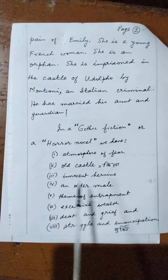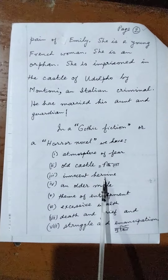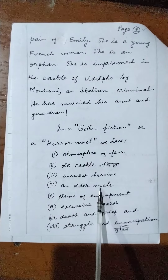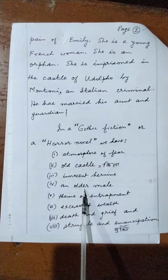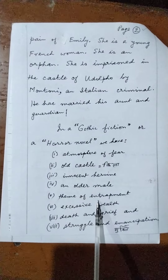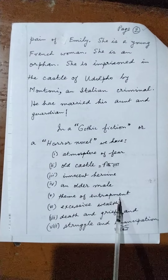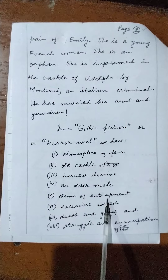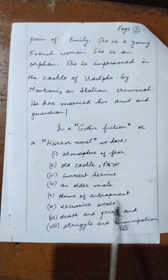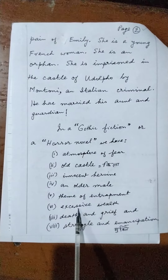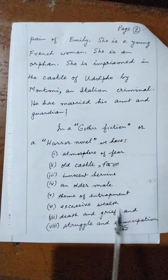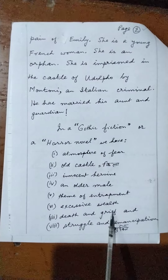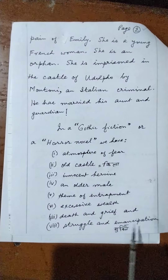Key elements of Gothic fiction include: an atmosphere of fear, an old castle, an innocent heroine, an old maid, the theme of entrapment, excessive wealth, and death and grief, as well as struggle and emancipation.